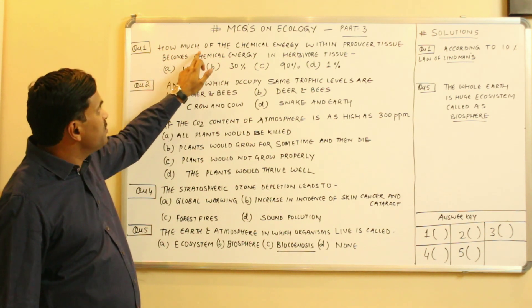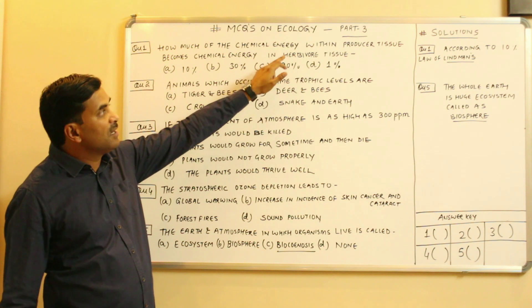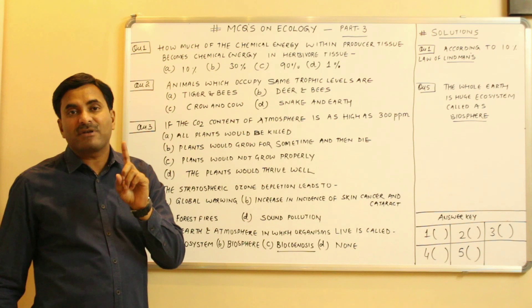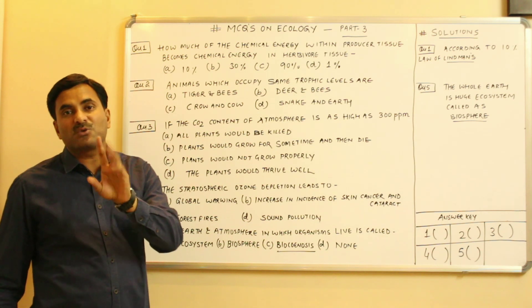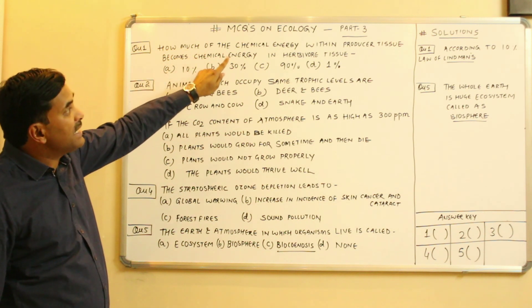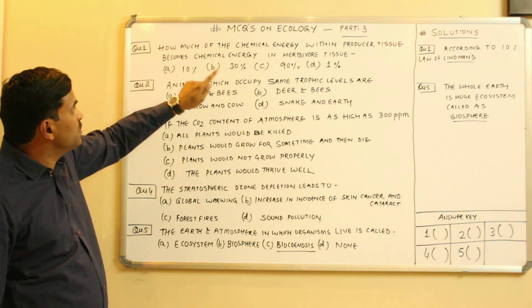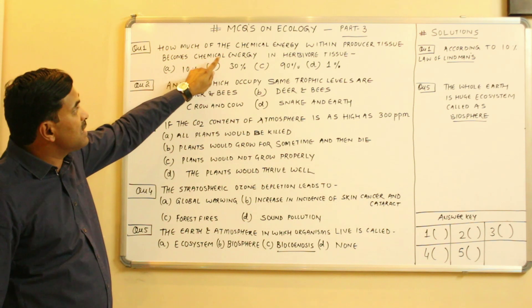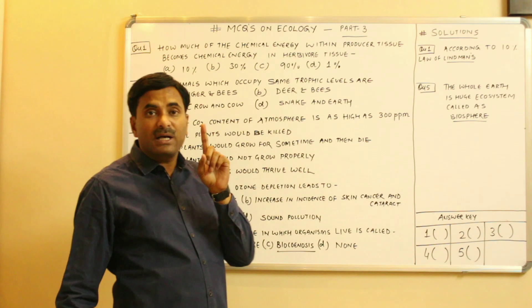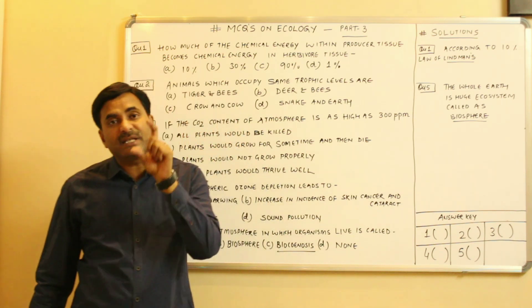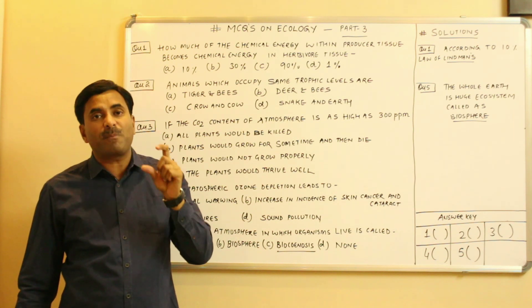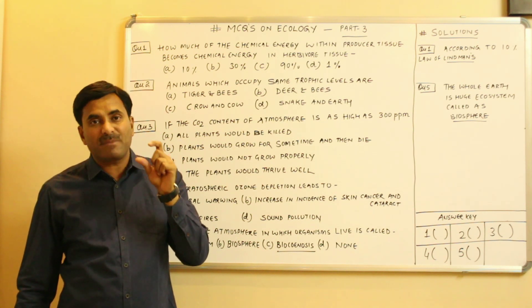The first question is: how much of the chemical energy within the producer tissue becomes chemical energy in herbivore tissue? As we know, producers are green plants that convert solar energy into chemical energy. At the T1 trophic level, producers are present, and at T2, the primary consumers or herbivores are present.